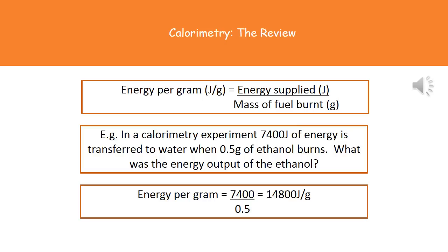The kind of question you might get and this is obviously a very simple one is that in a calorimetry experiment 7400 joules of energy is transferred to water when 0.5 grams of ethanol burns. What was the energy output of the ethanol? We've got our energy supplied in our question and we've got the mass of our fuel being burnt in the question. So all we do is we put those numbers into the equation which again you can find in your actual exam booklet and that is going to be 7400 divided by 0.5 which gives us our answer of 14800 joules per gram.